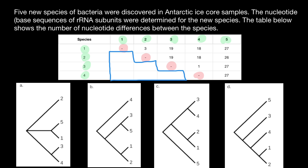Let's find the smallest number in the table. It is 1, between species 3 and 4 — that is the minimal distance, meaning they have to be very closely related. Let's check the first phylogenetic tree: species 3 and 4 are closely related there, so let's circle them. On the second phylogenetic tree, species 3 and 4 are distantly related — the length of those lines directly correlates with time, so we can say right away that this is the wrong phylogenetic tree. Now analyzing tree C: species 3 and 4 are very close, separated by minimum time, so far it looks good.